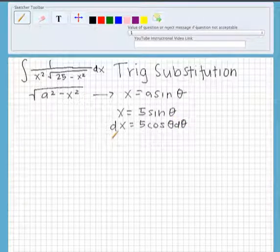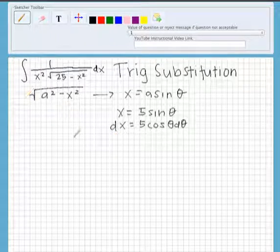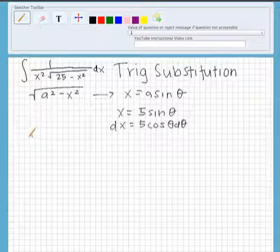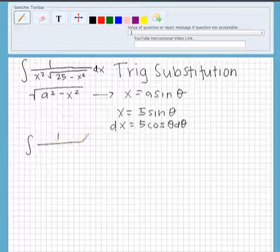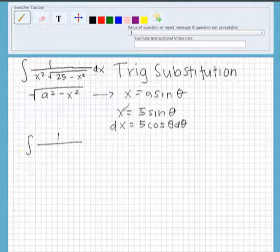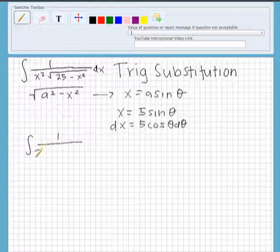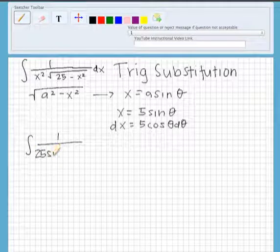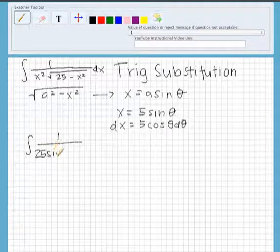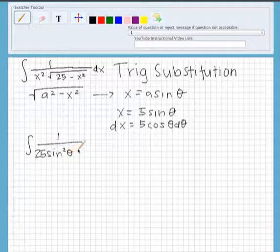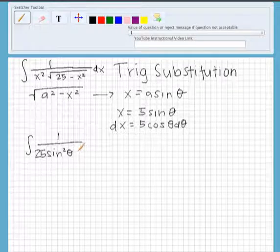So we are going to substitute the x into the integral problem. So we take the integral of 1 over x squared. So we take this x, and we square it, which would be 25 sine squared theta times radical.